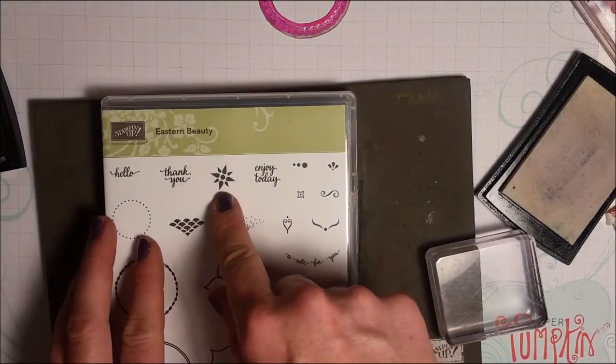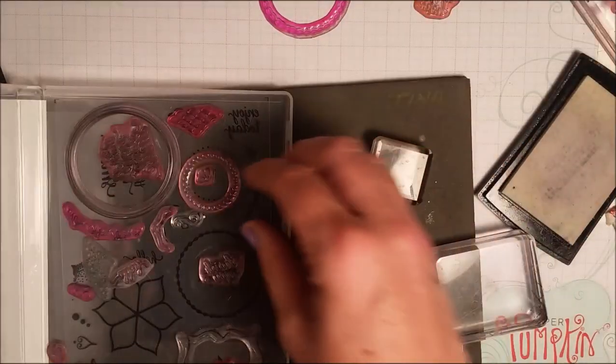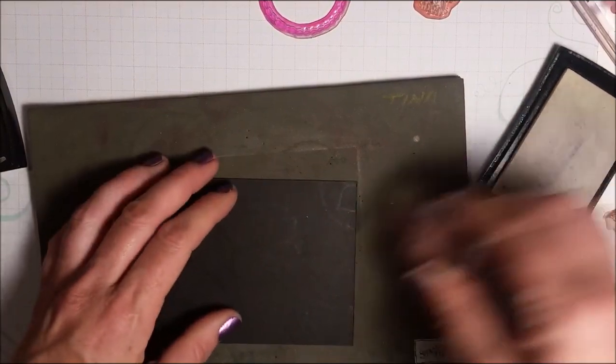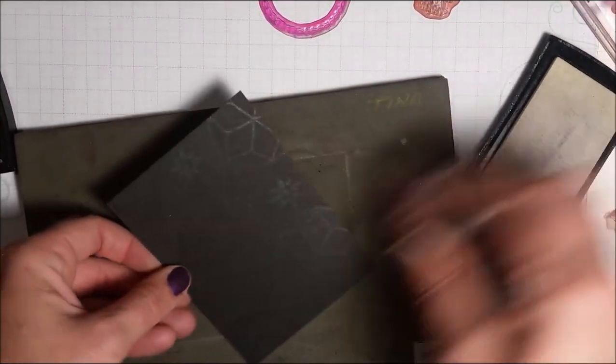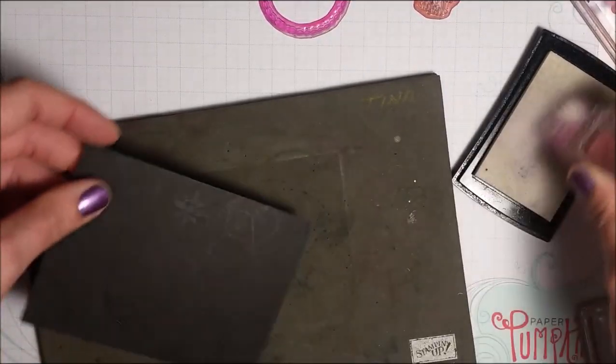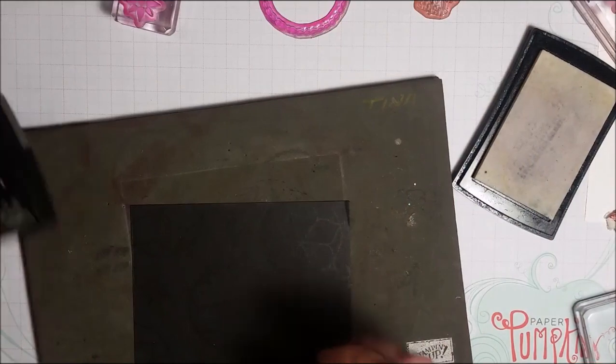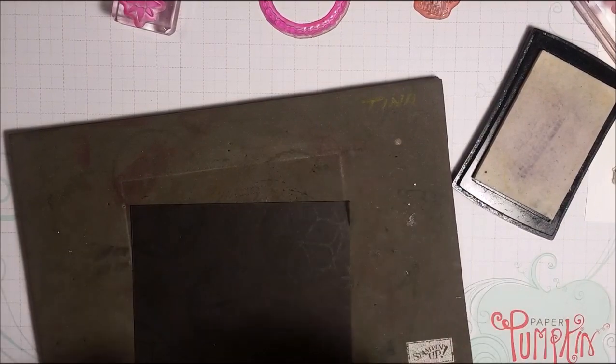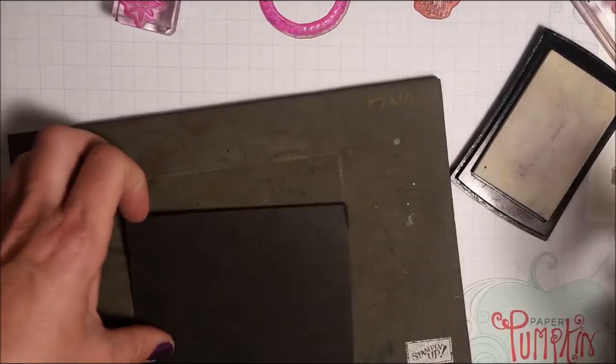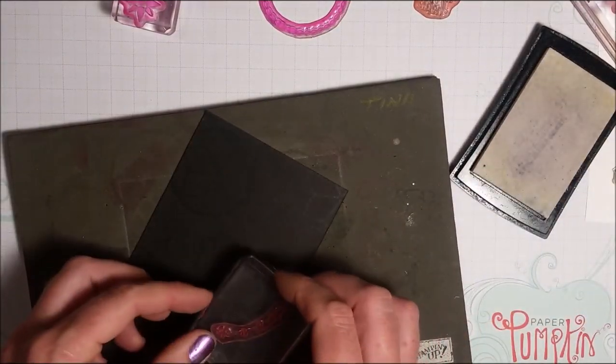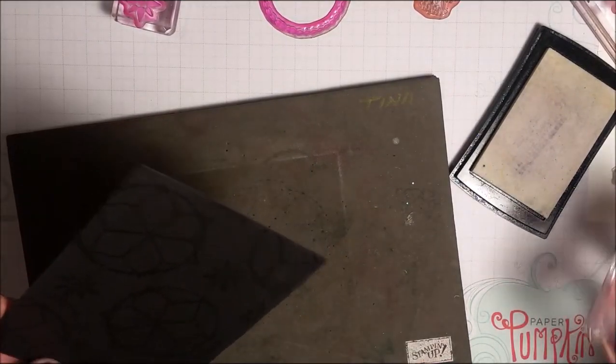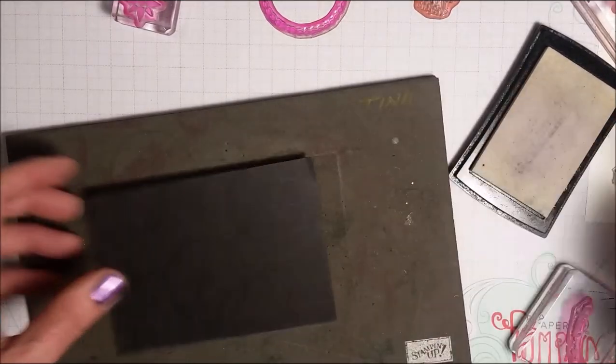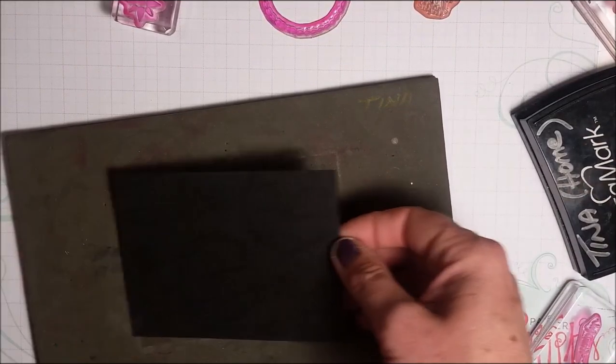Now I want to grab this star. And that's just going to get stamped randomly in between those images. And now I'm grabbing my Life is Beautiful stamp. And that's going to go right around the circles. I'm going to put one here. I know some of that's overlapping, but some of it's going to get covered up at the end. So it's just creating a background.